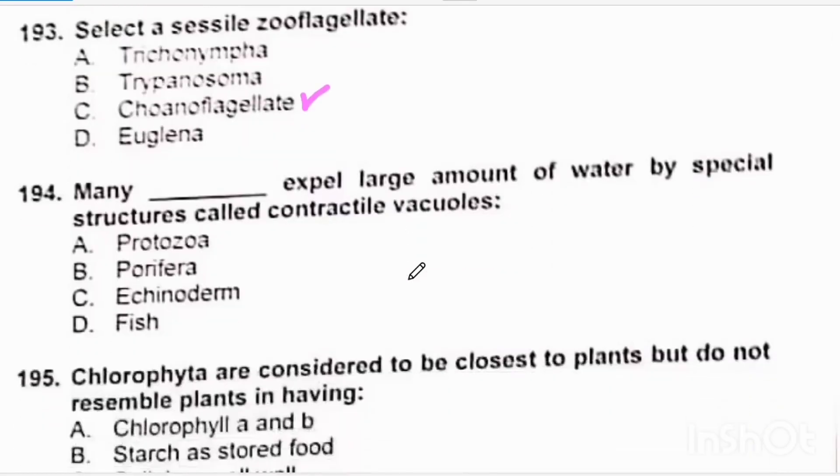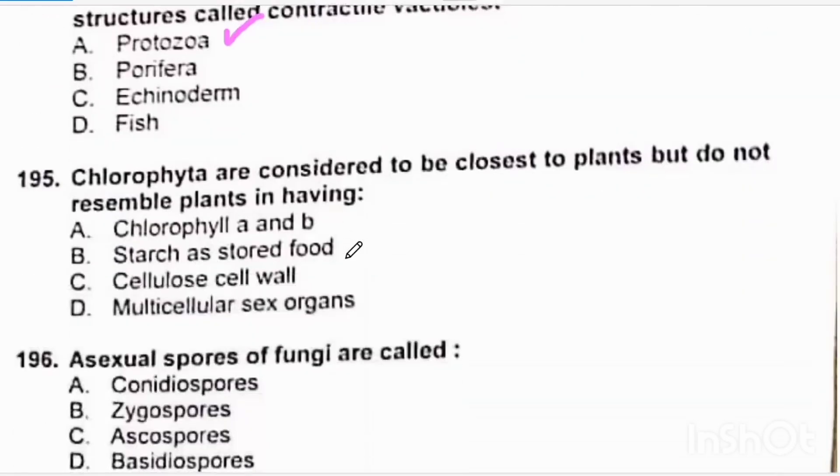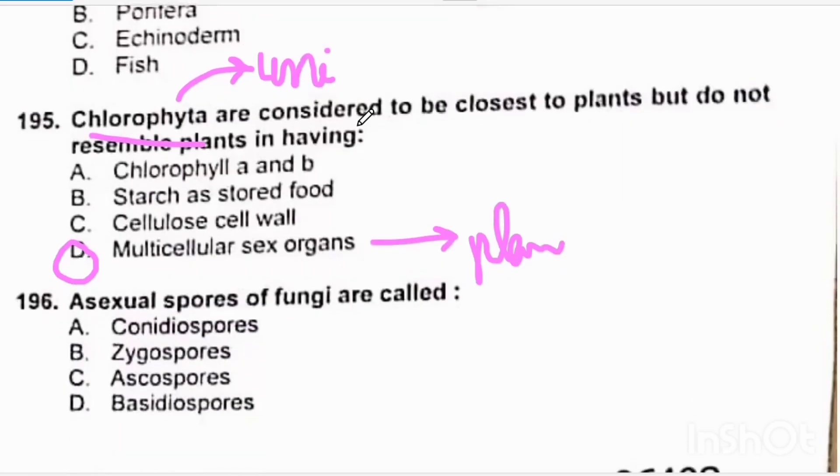Many protozoa expel large amounts of water by contractile vacuoles. Chlorophyta are considered to be closest to plants but do not resemble plants in having multicellular sex organs. Chlorophyta have unicellular sex organs. Their sex organs are unicellular. Moreover, the zygote is not protected by the parent body. On the other hand, in plants the zygote is protected by the parent body and gets nourishment. Correct option is delta.